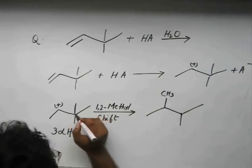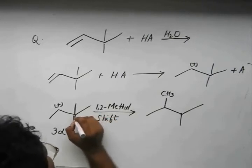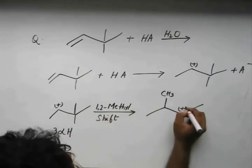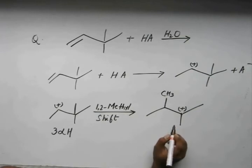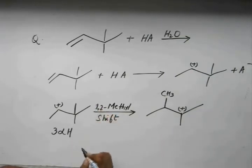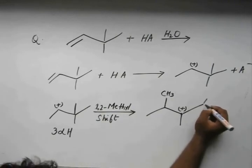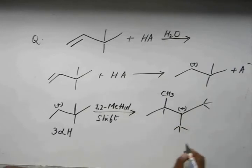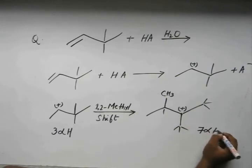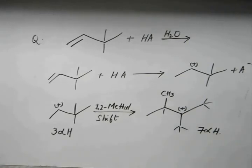This plus and this minus formed a bond over here. Now this carbon was left with a positive charge over here. Let's see how many hyperconjugable H this ion has after a 1,2 methyl shift.